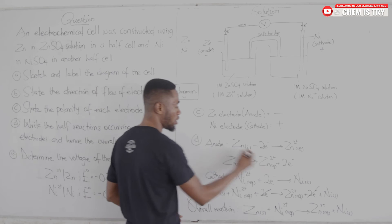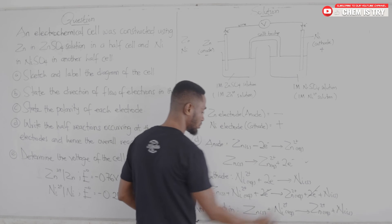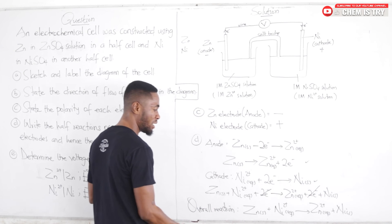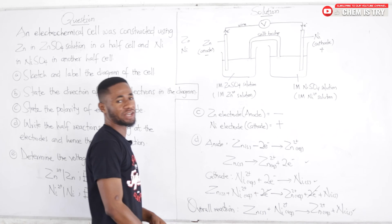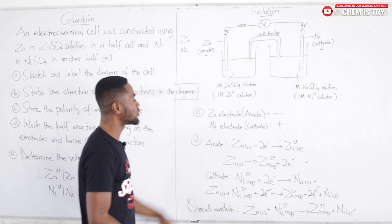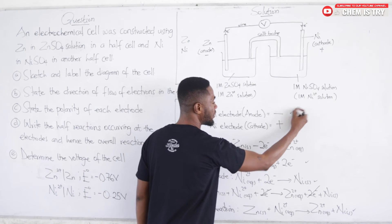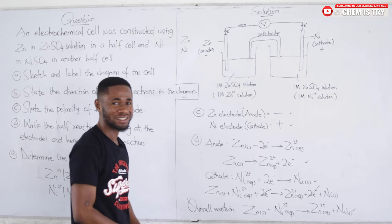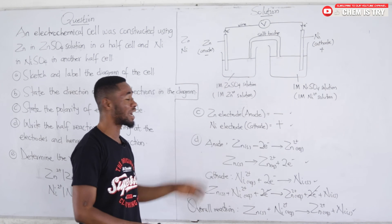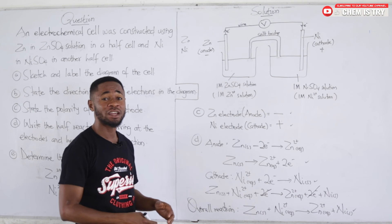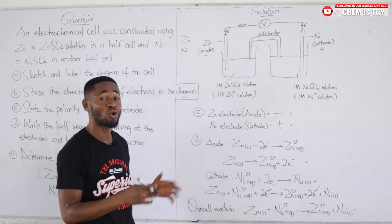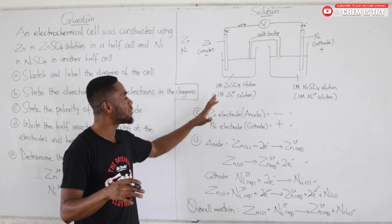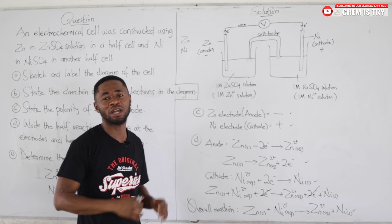Marks are also awarded for the polarity of the anode and the polarity of the cathode. When this question comes it might look difficult to approach, but the moment you start solving it — if you know what you are doing — it becomes one of the easiest questions you can get.